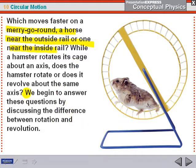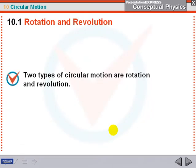The first thing we need to do is figure out the difference between rotation and revolution. The two types of circular motion are rotation and revolution.